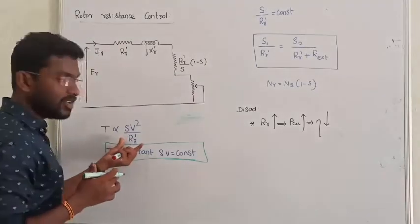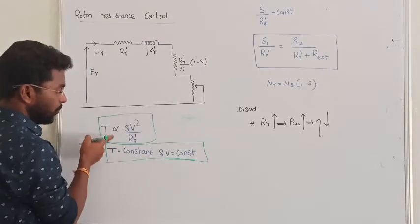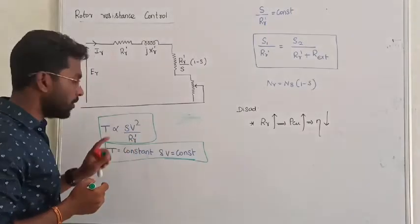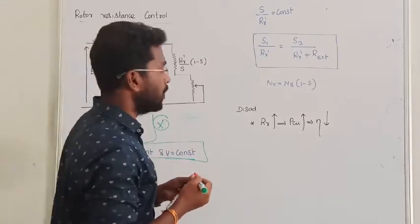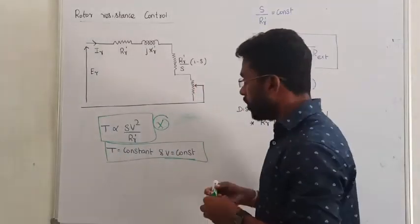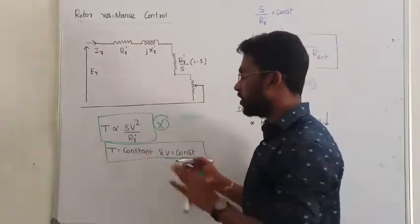Next step, the torque equation is important. T is directly proportional to S times V squared by R. Very important notation, don't forget. Again, take this one. Now very simple. Now what we are going to do - rotor resistance increase for speed control.